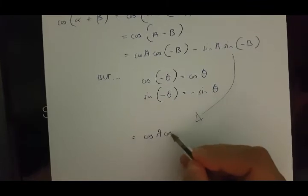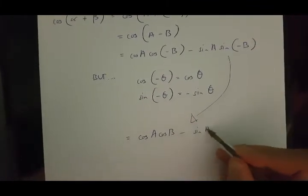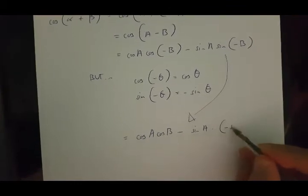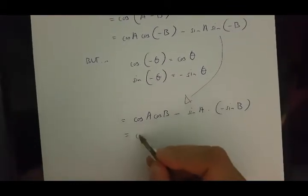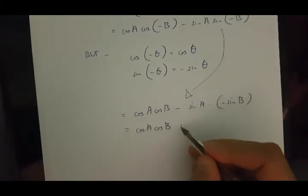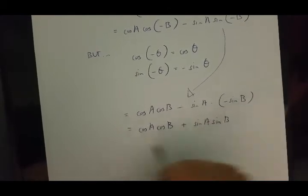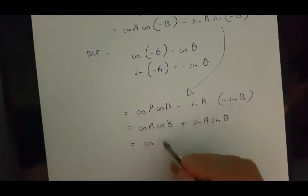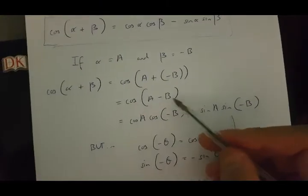cos A cos B minus sin A times sin(-B). And this can be transformed into cos A cos B plus sin A sin B, which is cos(A - B), as we can see over here.